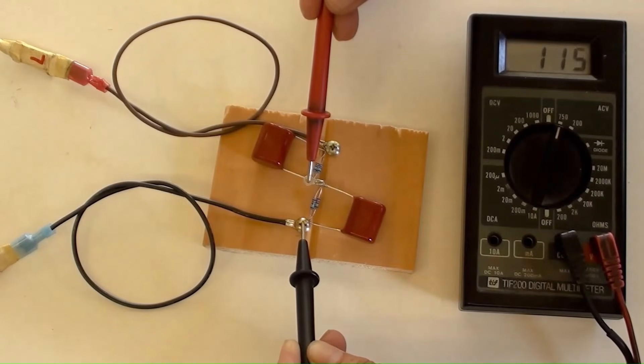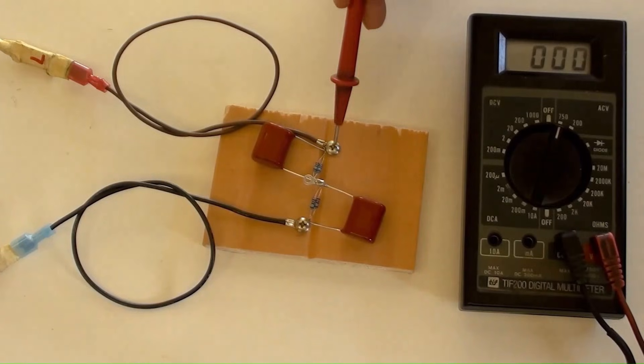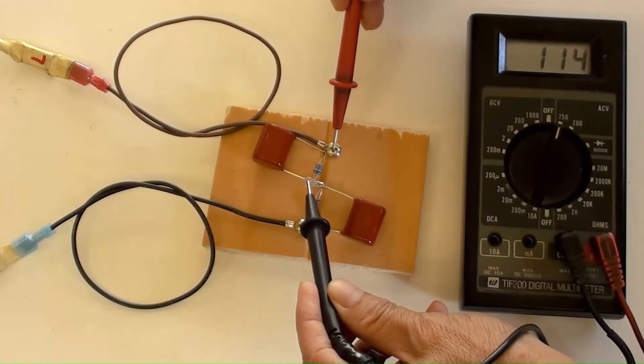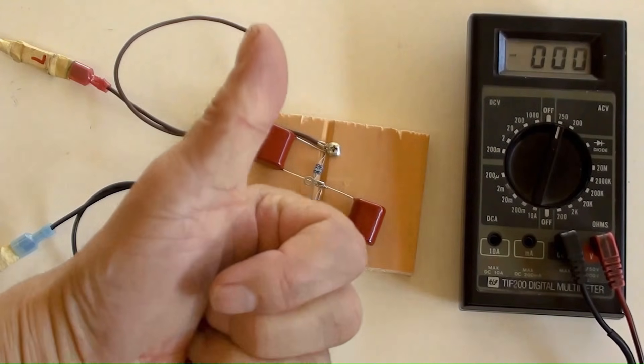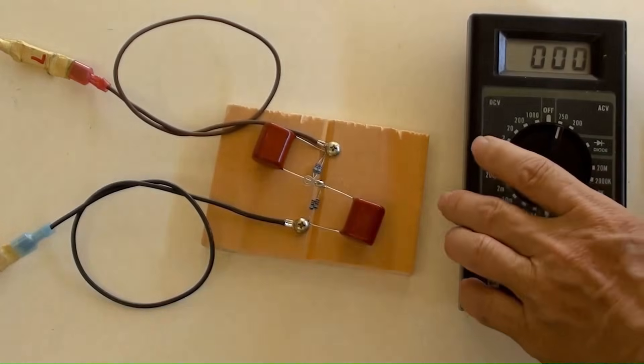The output voltage of AC 116V has been showed from the meter. It is almost a half value of the input AC voltage's value. So, this is a good device made by yourself. Switch the AC power off now.